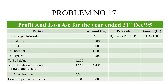Now let's look at the profit and loss account, which records all indirect income and expenses — items not directly related to the factory. Office-related expenses and office-related income go here. We transfer the gross profit from the trading account to the credit side of the profit and loss account. The gross profit brought down is Rs. 1,34,150. On the debit side, carriage outwards is an indirect expense recorded here.